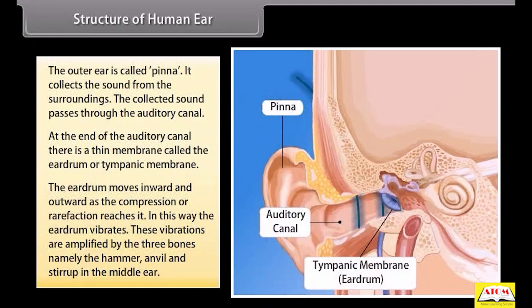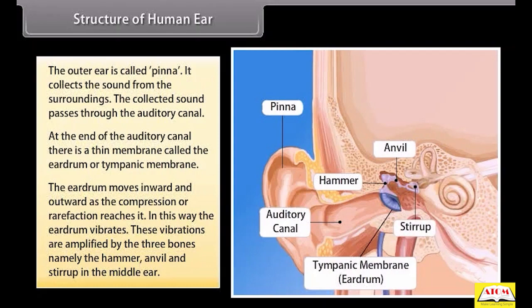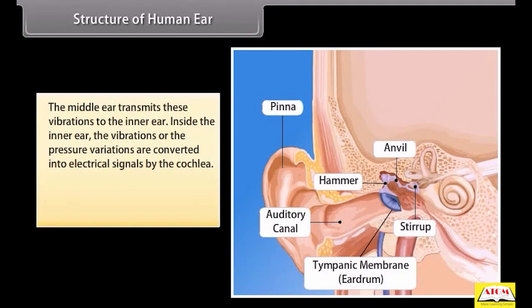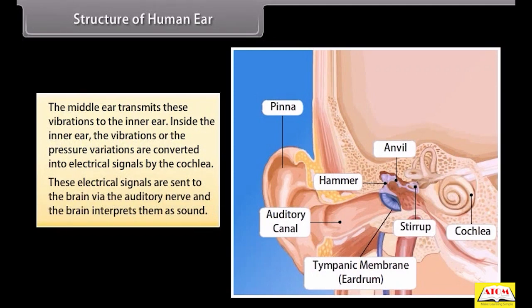These vibrations are amplified by the three bones, namely the hammer, anvil, and stirrup in the middle ear. The middle ear transmits these vibrations to the inner ear. Inside the inner ear, the vibrations or the pressure variations are converted into electrical signals by the cochlea. These electrical signals are sent to the brain via the auditory nerve and the brain interprets them as sound.